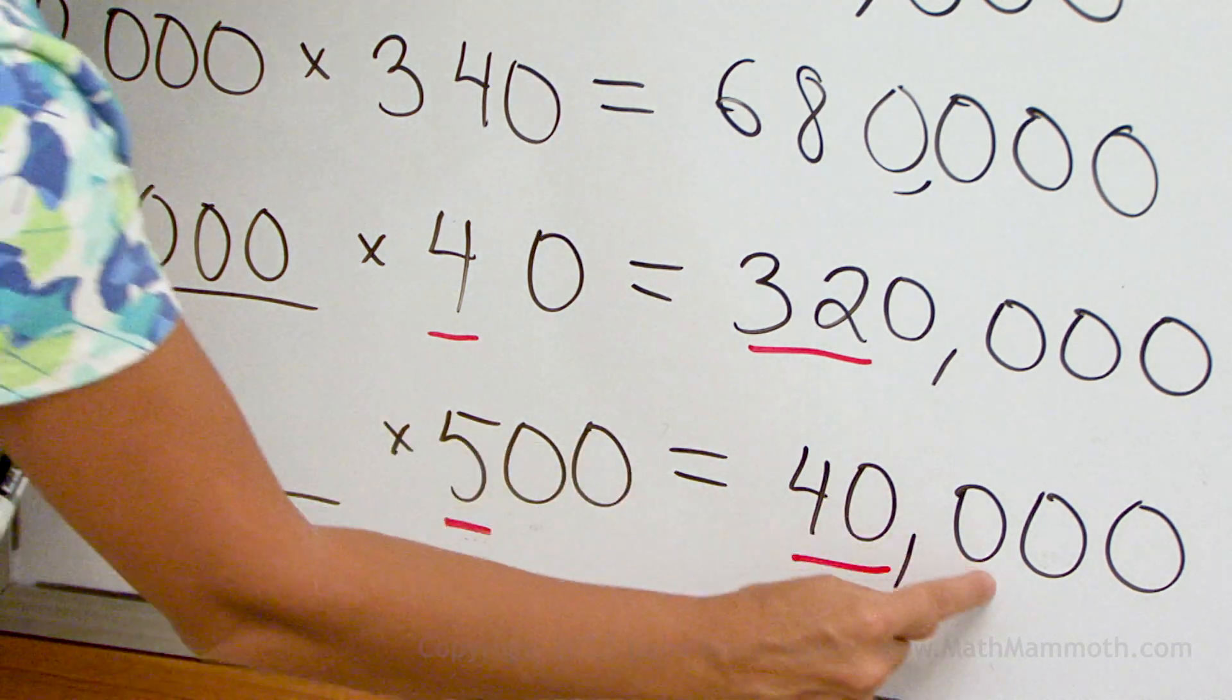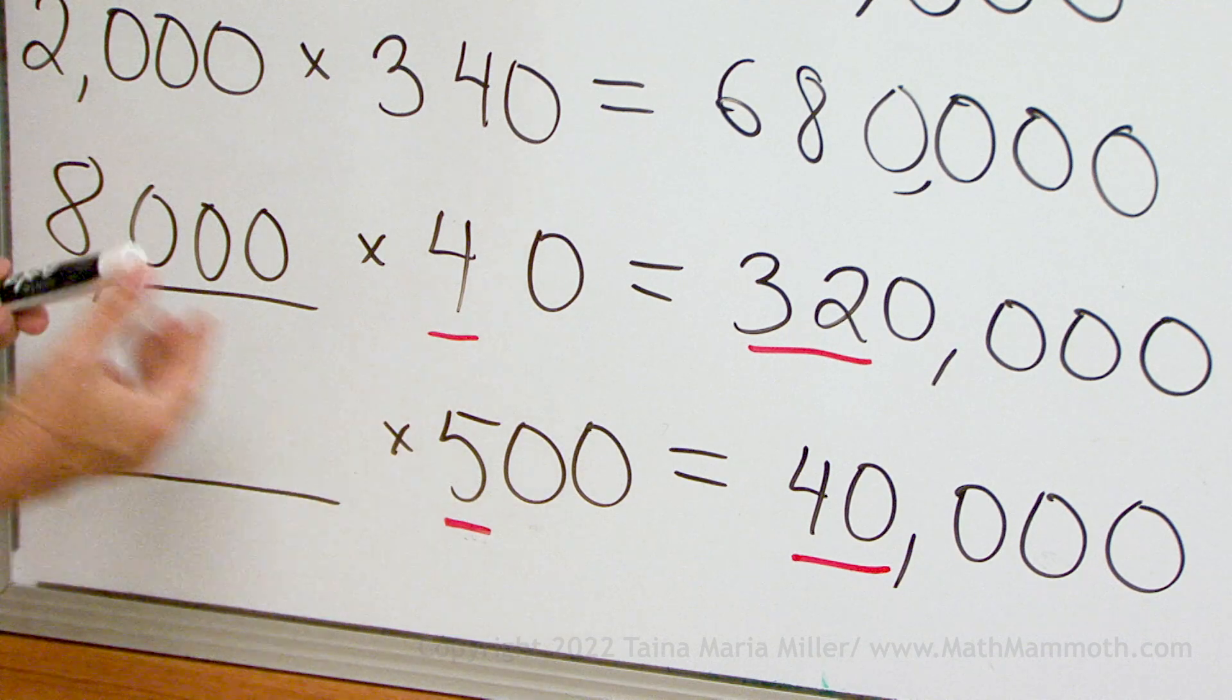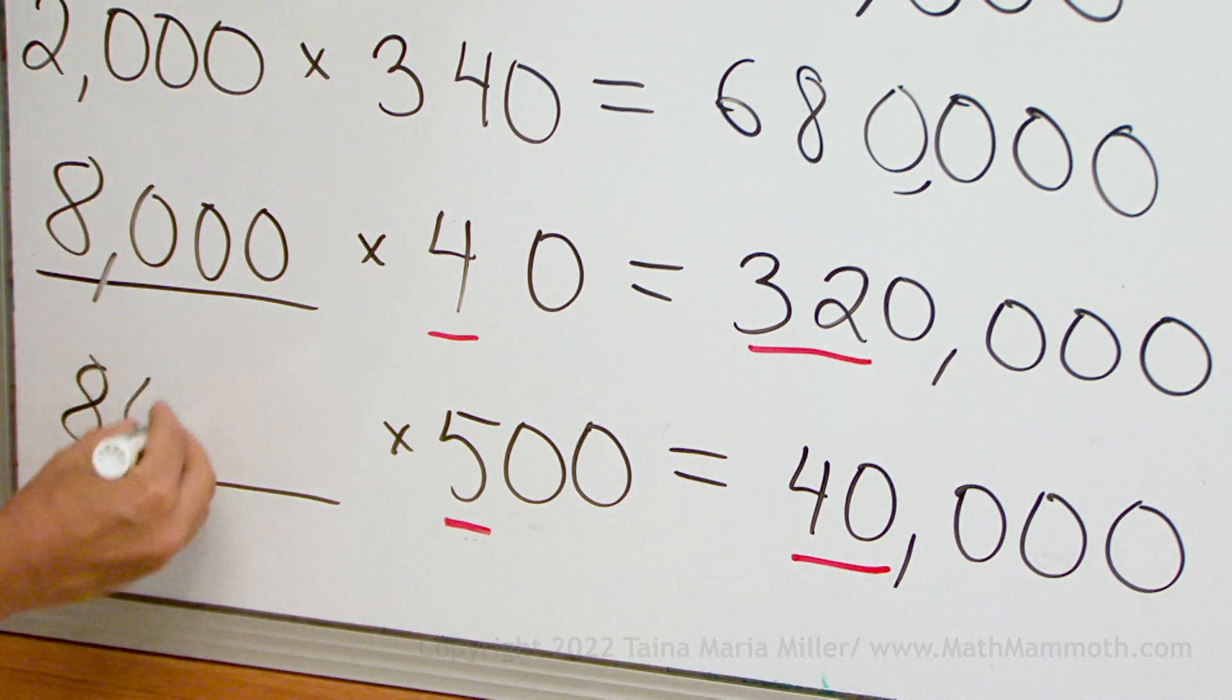And now the zeros. 3 here, 2 here. So, just 1 here. That's right.